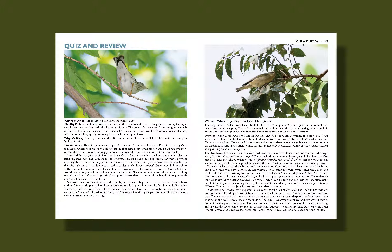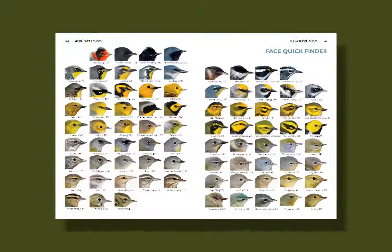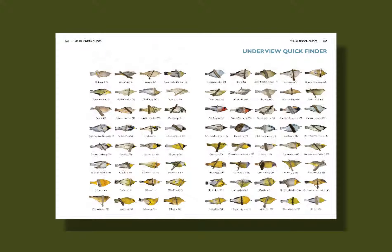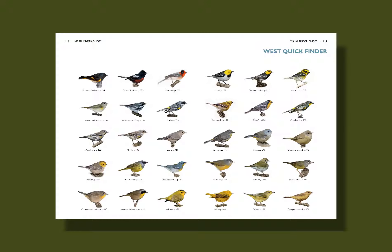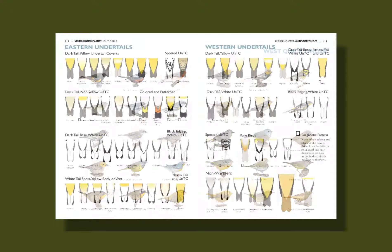We designed this guide to be as efficient as possible when identifying a warbler. One useful tool in this process is the quick finders. We use both visual and audio quick finders to help you quickly find a bird that you're looking for. The visual quick finders are broken into side view, 45-degree view, and underside, so that they're effective from whatever angle the bird is being seen. We also have east and west coast quick finders to help narrow down the selection by range, as well as a complete undertail finder.